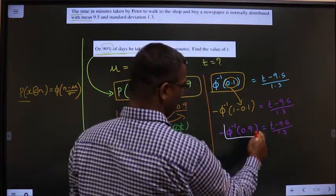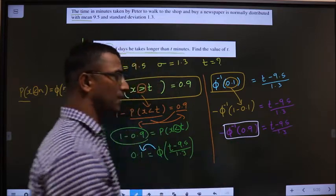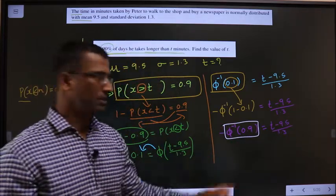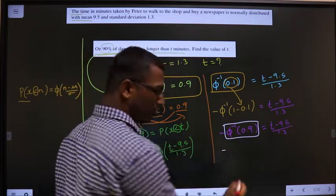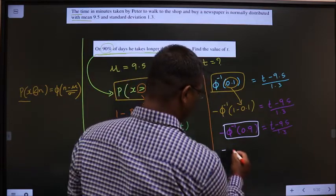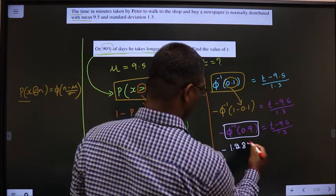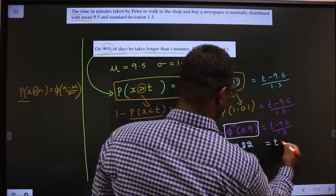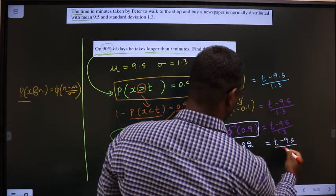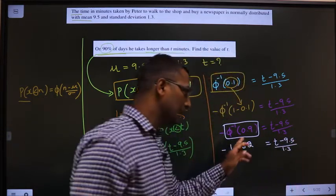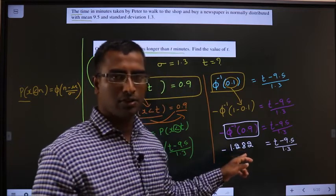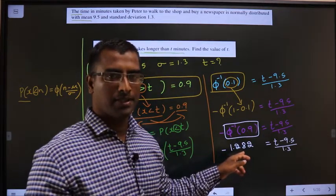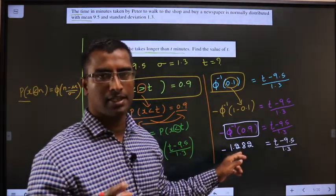Now, this value you will get from normal distribution table. And you should get it to be 1.282 equal to T minus 9.5 by 1.3. If any doubts how do we use normal distribution table, look at the playlist given in the description.